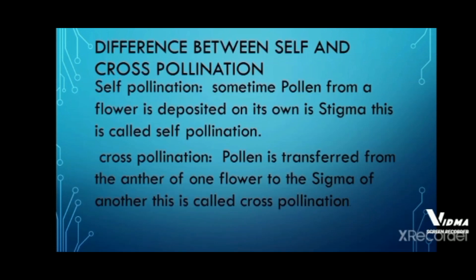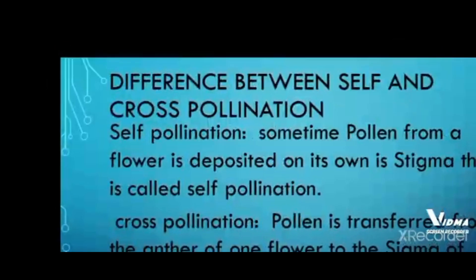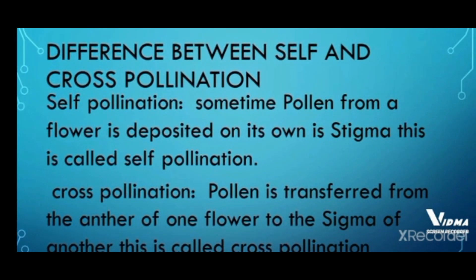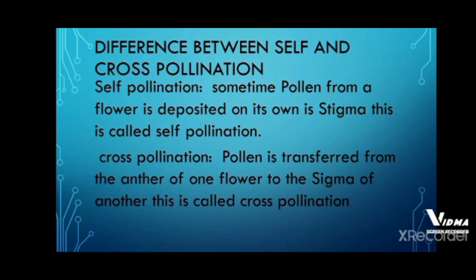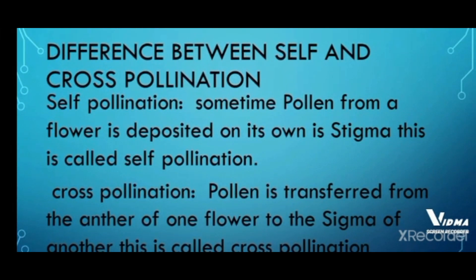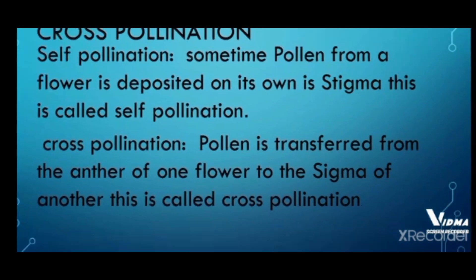Now we will talk about the difference between the two types of pollination: self-pollination and cross-pollination. In self-pollination, the pollen of the same flower deposits on the stigma of that same flower. In cross-pollination, the pollen from one flower deposits on the stigma of a different flower. In cross-pollination, two flowers are involved, whereas in self-pollination only one flower is involved.